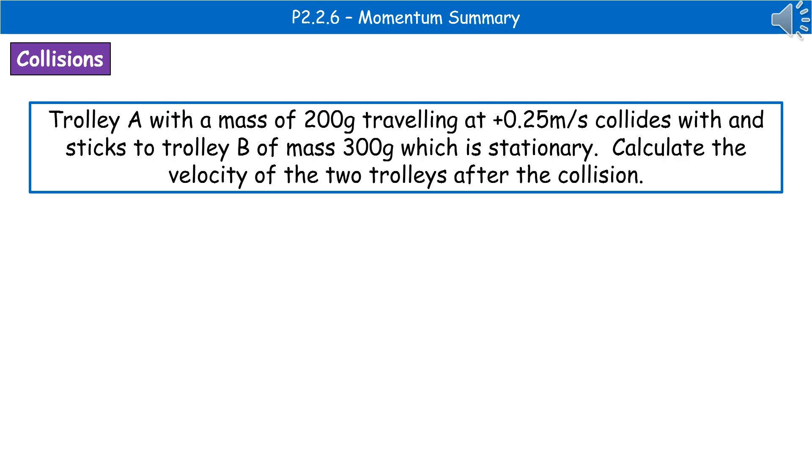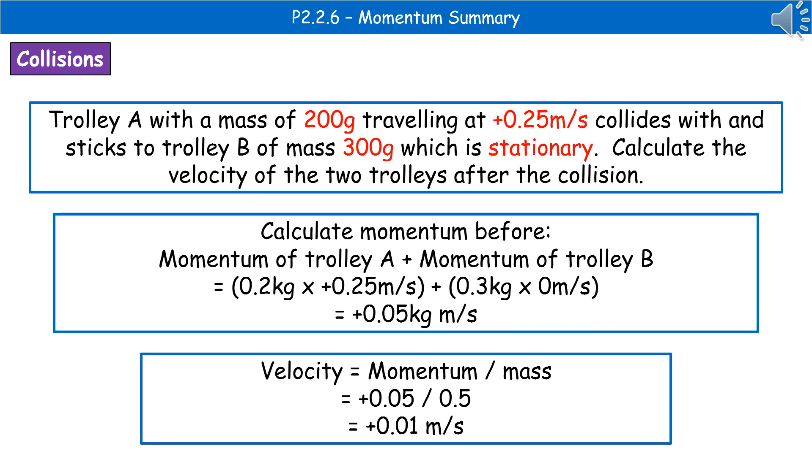They could ask you to carry out calculations using the momentum equation. And here's an example of one of the kinds of questions you could see. Trolley A with a mass of 200 grams traveling at plus 0.25 meters per second collides with and sticks to trolley B of mass 300 grams, which is stationary. Calculate the velocity of the two trolleys after the collision. First thing we do, as always in a calculation question, is highlight, underline, circle, or jot down the important bits of information so we don't have to keep rereading.